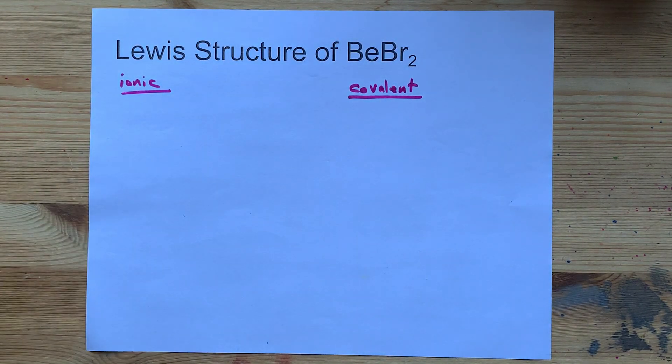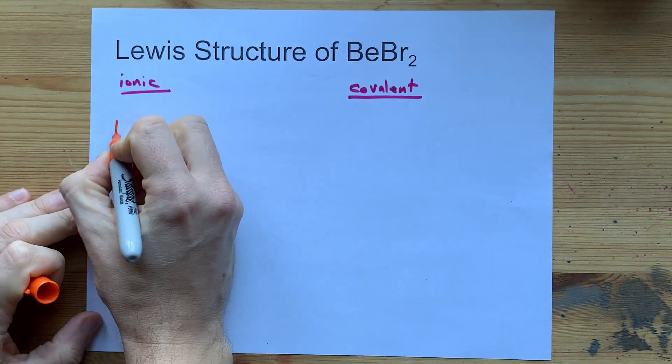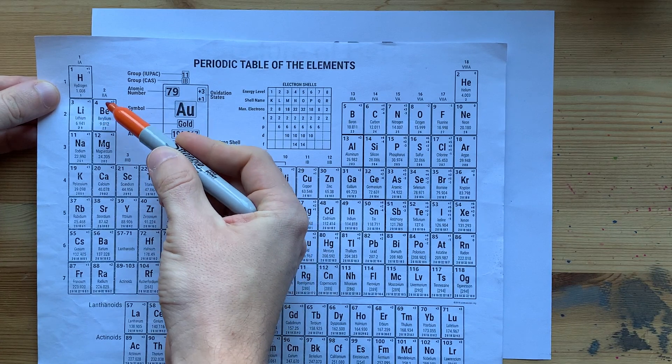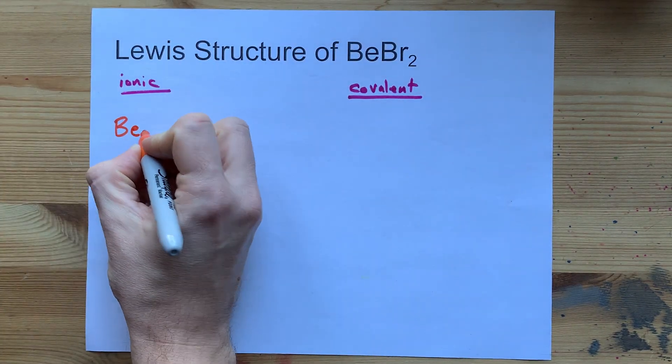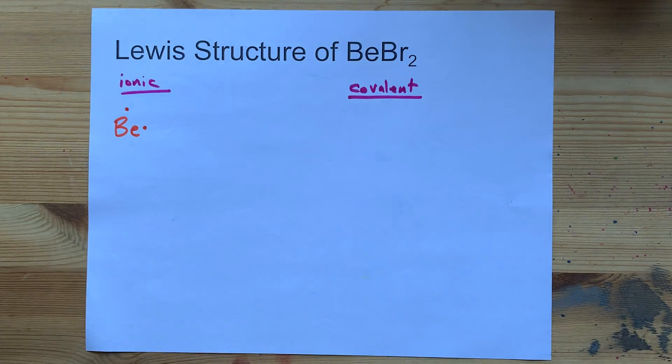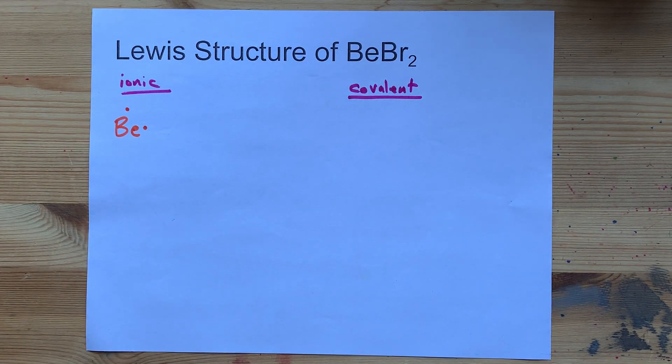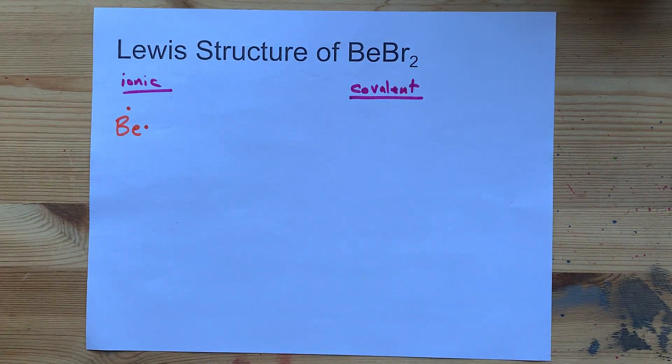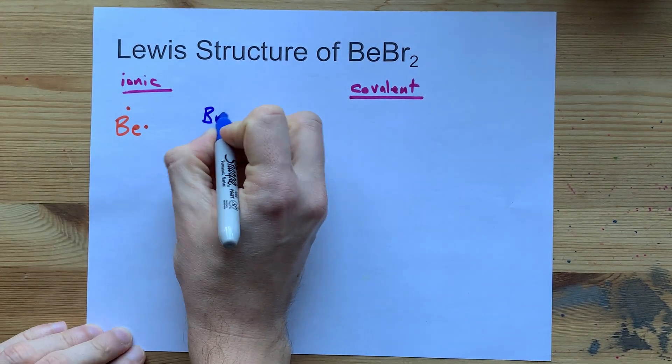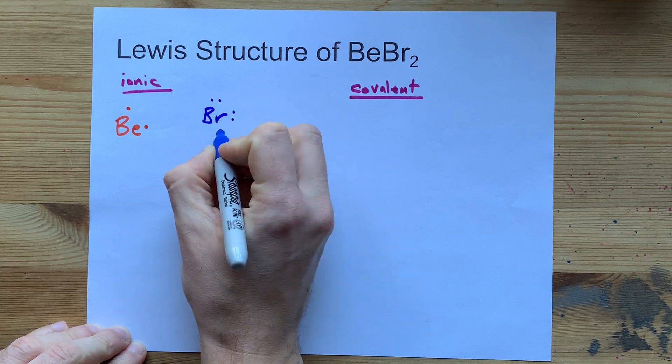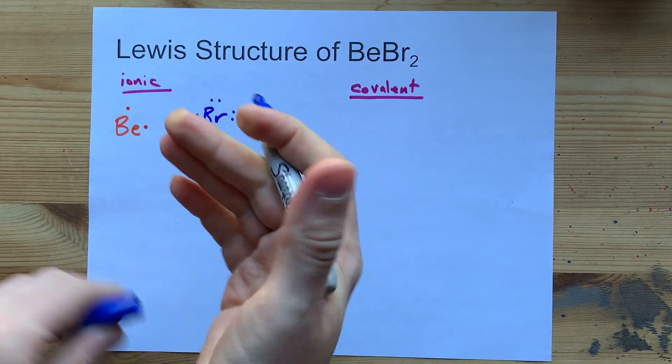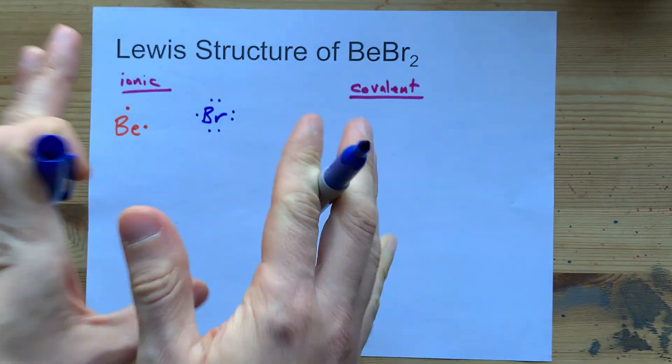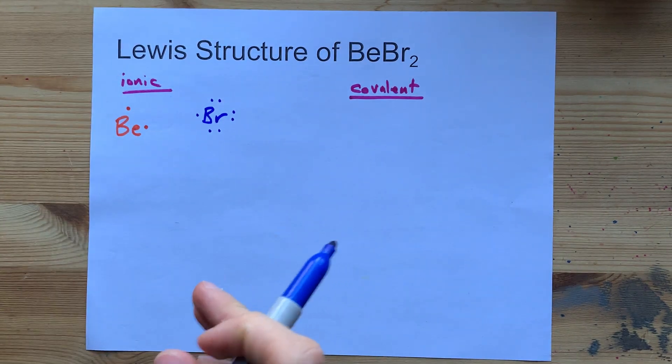If we try for the ionic structure, we'll start with beryllium, which is in the second column of the periodic table and brings two valence electrons with it. Bromine is a halogen. It's in group 17 and brings seven valence electrons with it. Now, the way that these outer shells of electrons work is that most atoms want a full outer shell of eight electrons. It's called the octet rule.